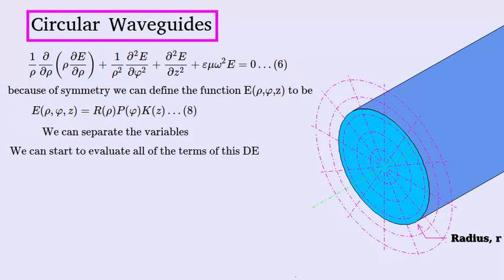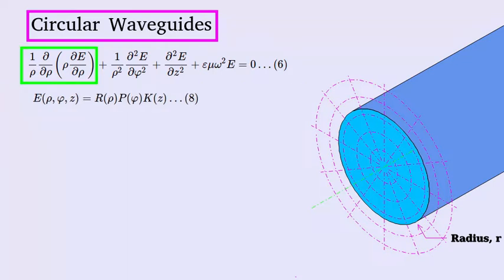So now we can start to evaluate this differential equation that we've abbreviated to dE, and to do this we'll substitute this equation for E into this dE. I'll just write these equations at the top of the screen here. We'll make this substitution and solve it piece by piece. We'll start on this first part of the equation.